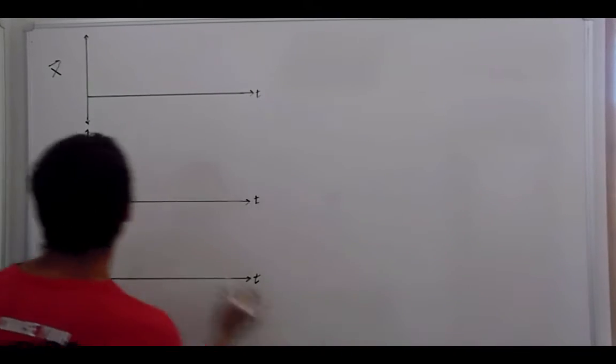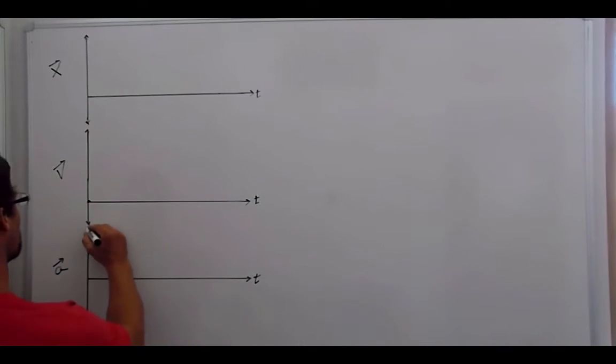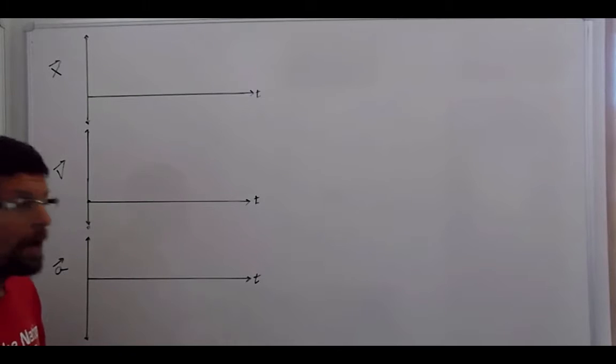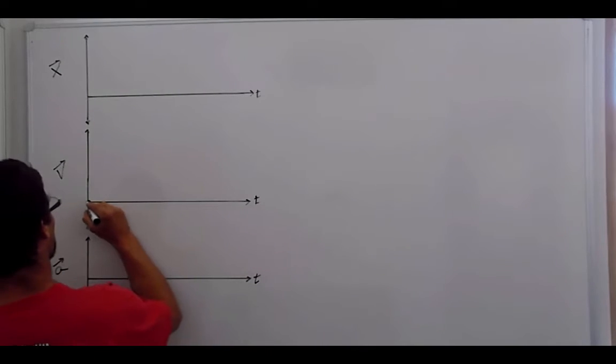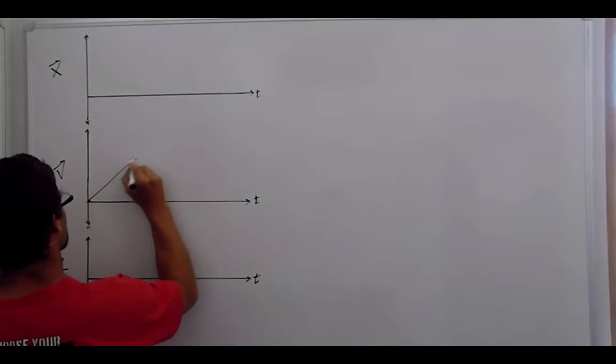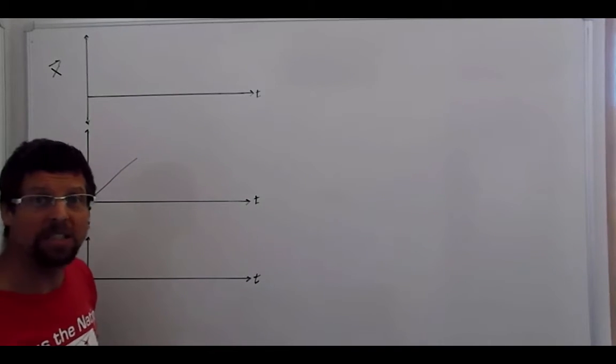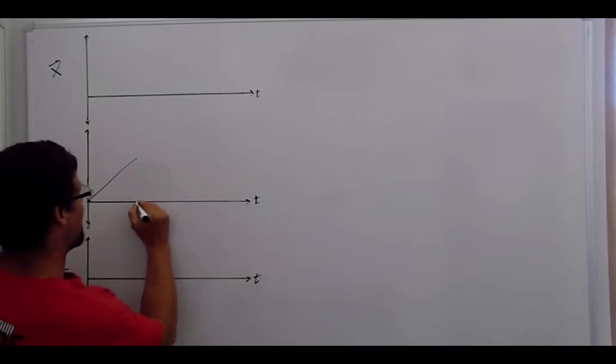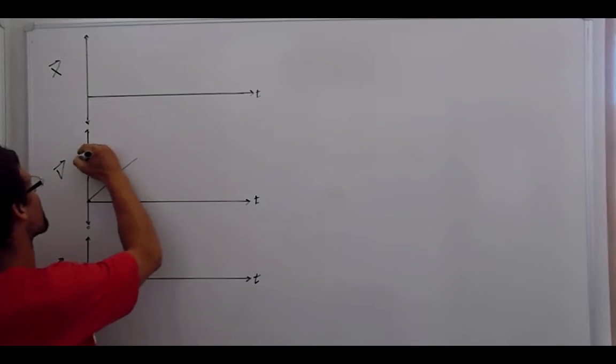All right, so we know at the very beginning we're not moving. V naught at t equals zero is zero. But I get going faster and faster, and so the graph might look like this. Over time, my velocity increases. So let's say over four seconds, I get up to 10 meters per second.